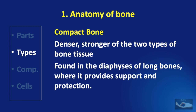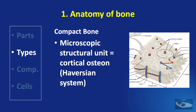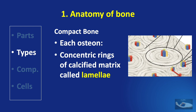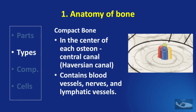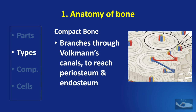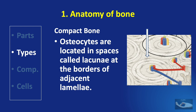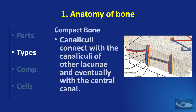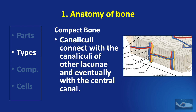Compact bone is the denser and stronger of the two types. It is found in the diaphysis of long bones where it provides support and protection. The basic microscopic structural unit of the compact bone is called the cortical osteon or the Haversian system. Each cortical osteon consists of concentric rings of calcified matrix called lamellae. In the center of each osteon is a central canal known as the Haversian canal, which contains blood vessels, nerves, and lymphatics. The central canal has branches called Volkmann's canals through which blood vessels can reach the periosteum and endosteum. Osteocytes are located in spaces called lacunae at the borders of adjacent lamellae, with an intricate network by which canaliculi connect with other lacunae and eventually with the central canal of each Haversian system.